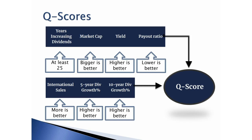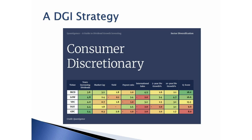The aggregate of all these factors produces a Q score, which can then be used to rank companies. Here we've done that in the consumer discretionary space — we've ranked five companies in our universe: McDonald's, an excellent dividend growth stock, then Lowe's and VFC, then Target and GPC. One example: look at Lowe's in the second column and look at the international sales row — it's at a two, because Lowe's doesn't actually have any international sales, so they're not rewarded for that. Same thing with Target and GPC, whilst McDonald's has quite a bit of international sales because they sell things around the globe.